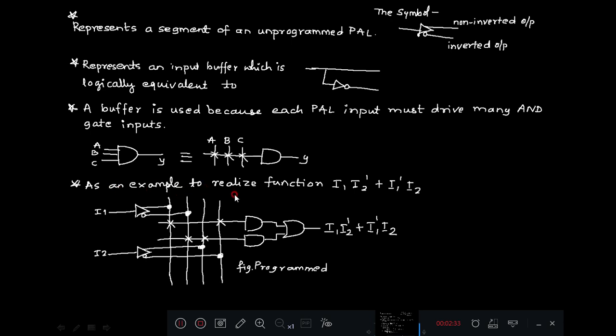As an example to realize the function I1 I2 dash or I1 dash I2, here inputs are I1 and I2. I1 this line corresponds to I1 and this bubble corresponds to I1 dash. Then for I2 this is the third line and I2 dash the fourth line. So these four vertical lines represent I1, I1 dash, I2, I2 dash.